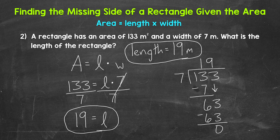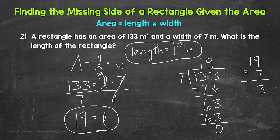We can check this by multiplying: 19 times seven. Seven times nine is 63 — carry the six. Seven times one is seven, plus six is 13. So we do get 133. You may be thinking: why did I use an X for the multiplication sign there? Well, there were no variables involved — we were just doing a multiplication problem — so we weren't going to confuse it with a variable.